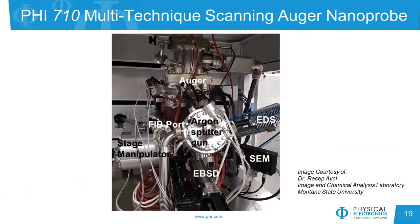Here's a photo of one of the 710 Auger instruments with a variety of the different techniques on it. The Auger analyzer and electron beam are located on the top. In the front of the instrument is the argon sputter gun for compositional depth profiling and surface cleaning. Below that we have the EBSD detector. Off to the right we have the EDS and the SEM scintillator below that. The stage manipulator is shown on the left, and above that is a port where the FIB would go — we don't actually have a FIB in this photo. On the back side of the instrument is where the BSE detector is located.